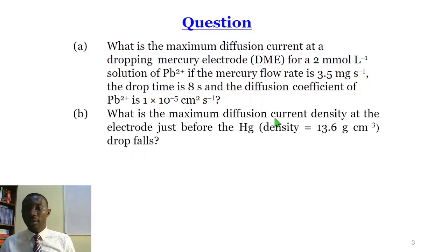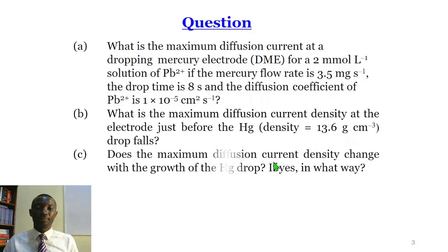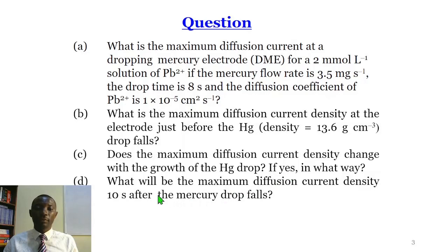Part B says: what is the maximum diffusion current density at the electrode just before the mercury drop falls? The density for mercury is 13.6 grams per centimeter cubed. Part C says: does the maximum current density change with the growth of the mercury drop? If yes, in what way? Part D says: what will be the maximum diffusion current density 10 seconds after the mercury drop falls?